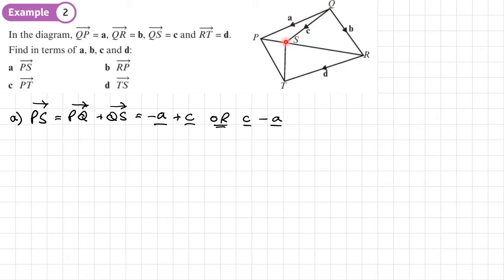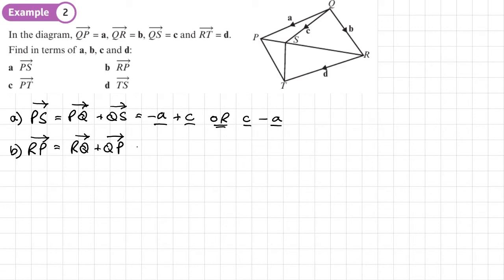Part b — find r to p. Going from r to p, we take the route r to q, then q to p. R to q is negative b, and q to p is positive a. So r to p is negative b plus a, or written as a minus b so we don't lose the minus sign.